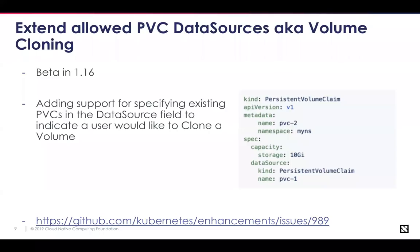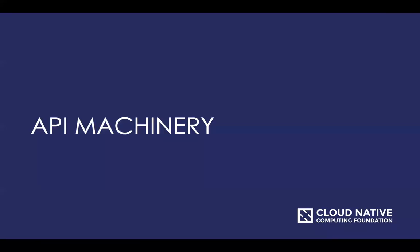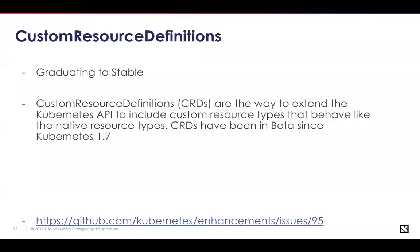Now let's dive into CRD mania, going through each SIG alphabetically. For API machinery: a resource is an endpoint in the Kubernetes API storing a collection of API objects — for example, the built-in pods resource contains pod objects. A custom resource is an extension of the Kubernetes API not necessarily available on every cluster, but represents a customization of a particular Kubernetes installation. Today all kinds of distributions use CRDs to put their own special sauce on it. With CRDs going officially stable, we'll start seeing them become even more prevalent in the Kubernetes ecosystem.